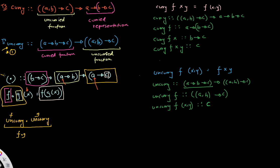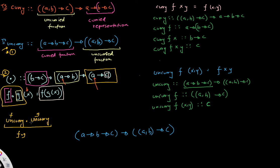The function composition operator takes in uncurry, which has the type signature A to B to C. In turn, uncurry gives you back the uncurried function that goes from a tuple of A and B to C. That is the type signature for this first uncurry, and the second uncurry has the same type signature.